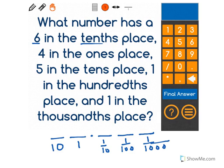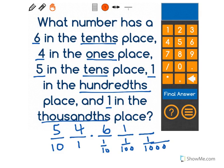So let's look. We have a 6 in the tenths place, that goes there, a 4 in the ones place, a 5 in the tens place, a 1 in the hundredths place, and a 1 in the thousandths place. So your number should be 54.611 for the correct answer.